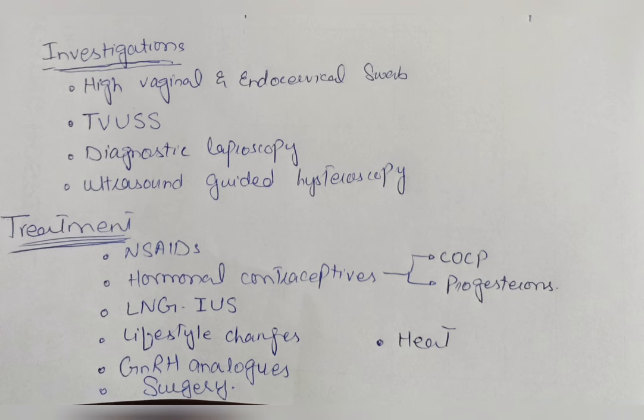The levonorgestrel intrauterine system is an intrauterine device that also releases progesterone and is effective for the treatment of endometriosis and adenomyosis. Lifestyle changes are also very important and help improve dysmenorrhea — these include a low-fat diet, high vegetarian diet, and exercise. Exercise improves blood flow to the pelvis, relieving pain. Heat packs, though old-fashioned, are still very effective — almost equal to NSAIDs.